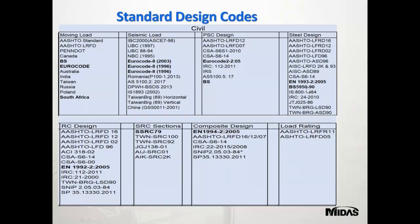Steel design also has Euro code and BS code. Whatever code you are using — whether Euro code, BS code, or other international standards — for structures or bridges, it is covered in the software. For RC design we have American and Euro codes. For steel reinforced concrete, we have SSRC 79 (American code) plus other international codes. Composite design has Euro, American, and other codes. Load rating has AASHTO. This shows how the software is embedded with all international codes.